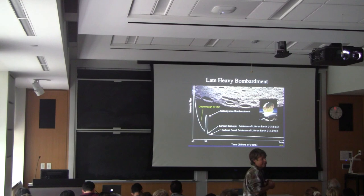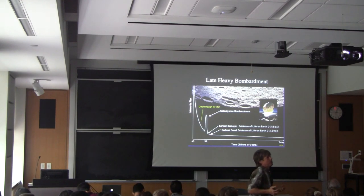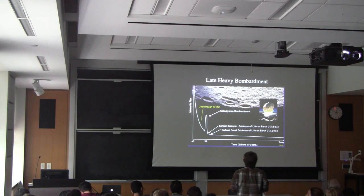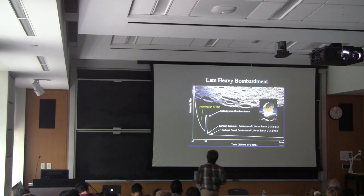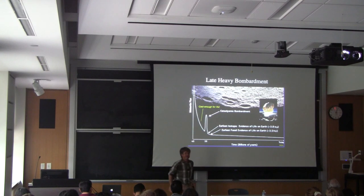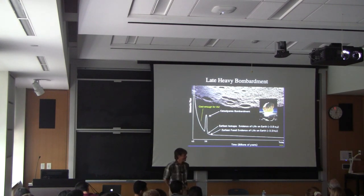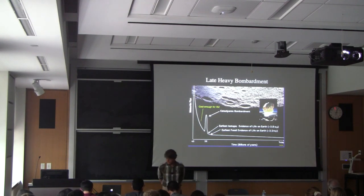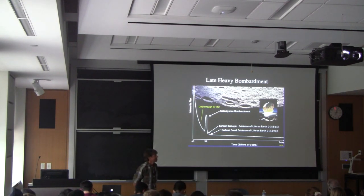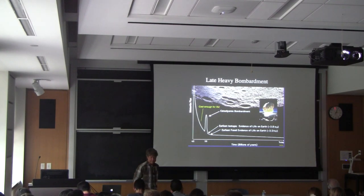An excellent question: is there any reason why there should have been a cataclysmic bombardment at this point in solar system history? With these collision events, you often get a cascade — one major collision produces a bunch of other bodies, creating a cascade event.